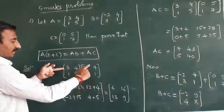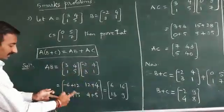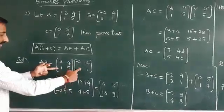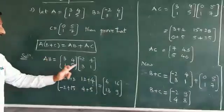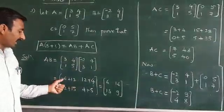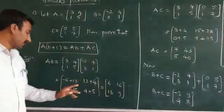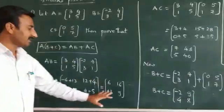And again, first row, second column: 3 into 4 is 12, 4 into 1 is 4. This is the position of second row, first column: 1 into -2 plus 5 into 3, 1 into 4, 5 into 4, 5 into 1. So finally, -6 plus 12 is 6, 12 plus 4 is 16, 15 minus 2 is 13, and 5 plus 4 is 9.